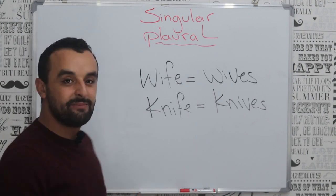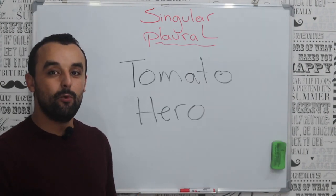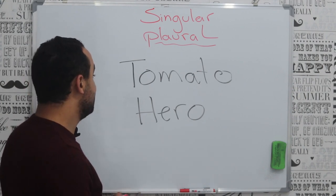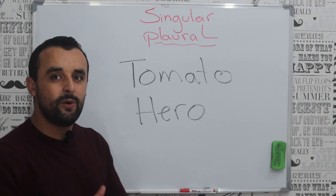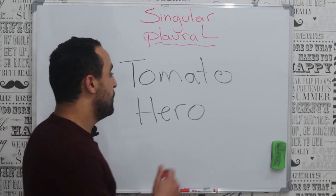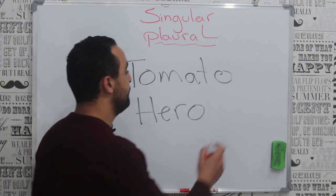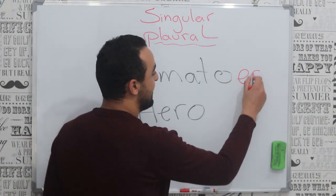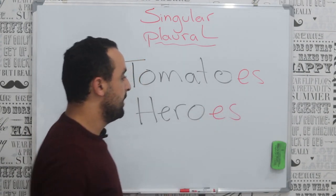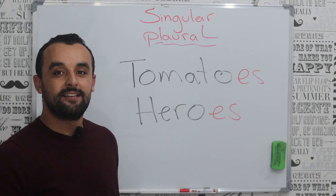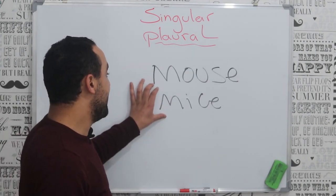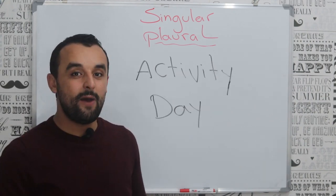Some words end with O, like tomato and hero. If we want to make these words into plural form, we have to put E before the S, so it becomes tomatoes and heroes. The next one: mouse becomes mice.